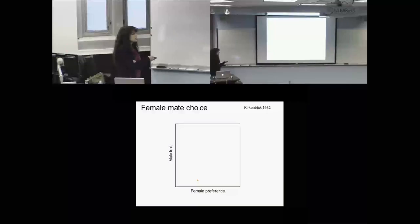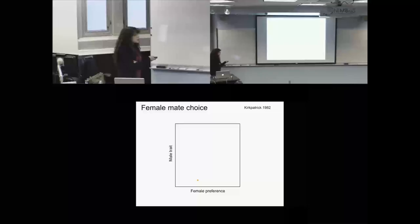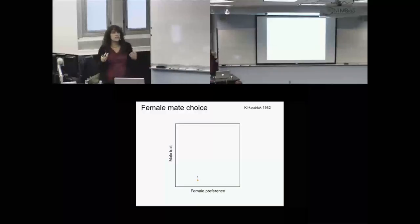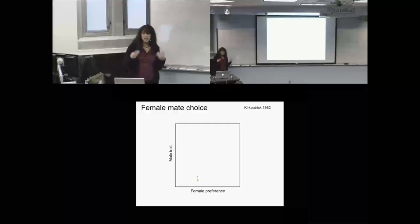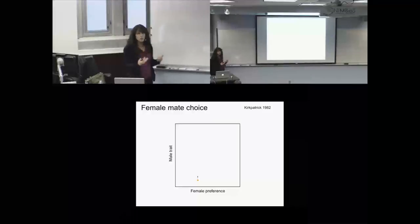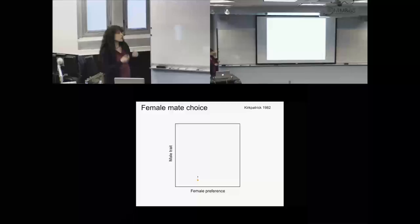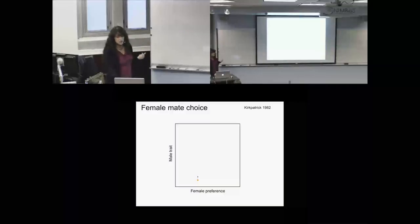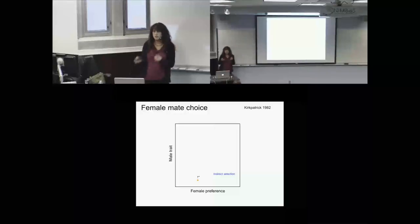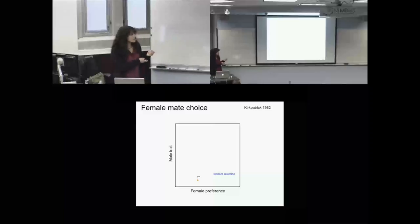When females have a preference for males with a trait, their offspring inherit both the preference and the male's trait. You get a statistical correlation or linkage disequilibrium between the trait and the preference. As we move upward in this space to increase the trait, this linkage disequilibrium drags the preference up also. So as the trait goes up, the preference goes up — that's indirect selection on the preference. In one generation we've moved up and over, and this repeats until we hit a line of equilibrium.